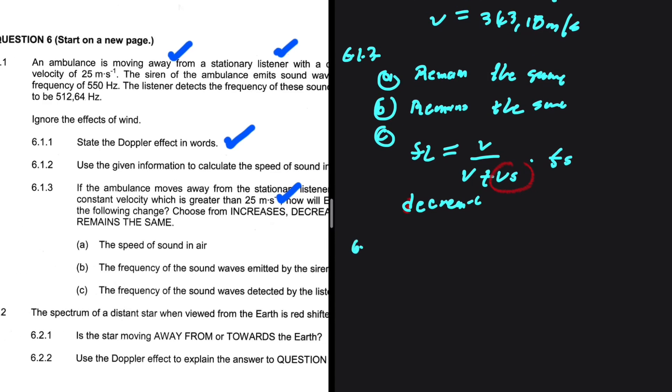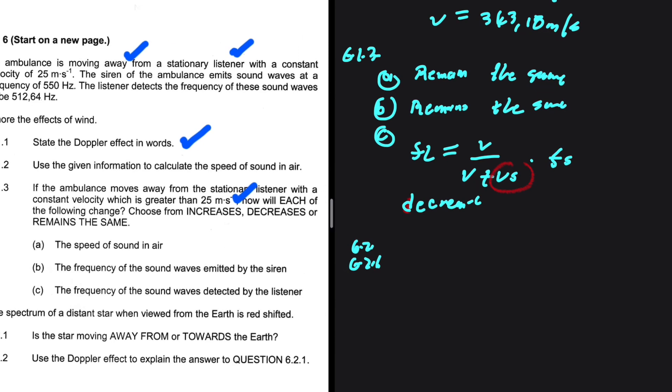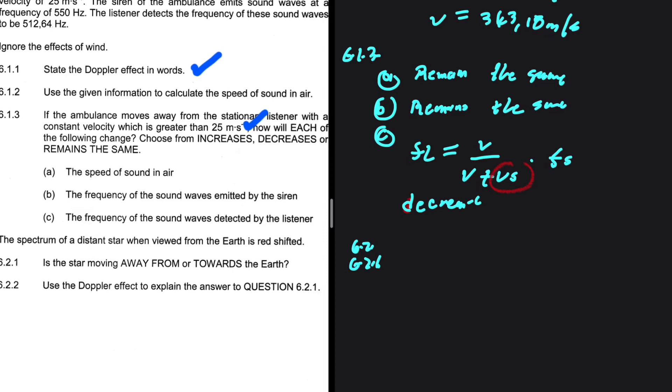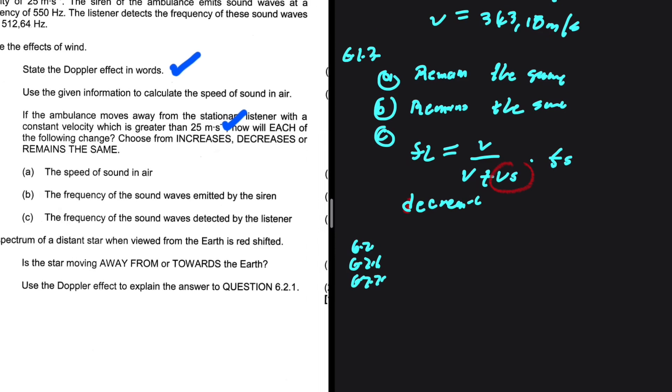And then 6.2, 6.2.1, the spectrum of a distant star when viewed from the earth is redshifted. Is the star moving away or towards the earth? And 6.2.2 says that use the Doppler effect to explain the answer to question 6.2.1. I'm interested on how you answered this question. So 6.2.1, is it moving away or is it moving towards? Let me know in the comment. And what reason did you give? Why are you saying it is moving away? If you said it is moving towards, why are you saying that that is the case? Let me know in the comment section.